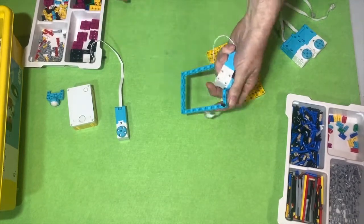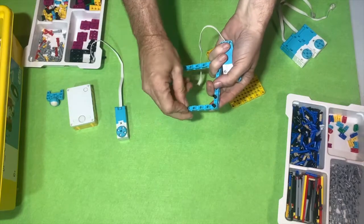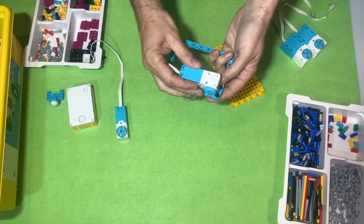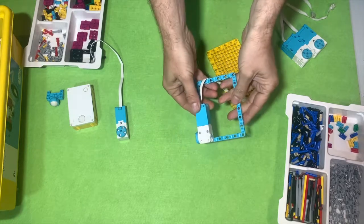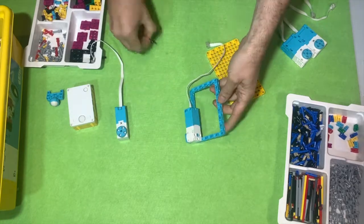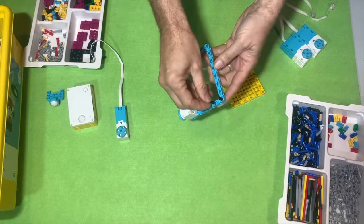I'm going to attach them to my frame using just three little black pins to join the motor onto the frame. Don't feel like you need to fill every hole with pins. Three is enough to hold a motor in place, and then I'm going to do the same on the opposite side.